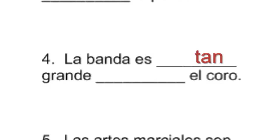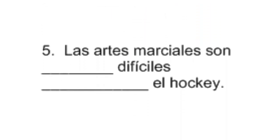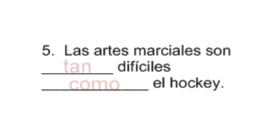La banda es _____ grande _____ el coro. We're just saying 'as big as' with an adjective in the middle, so we use tan: tan grande como el coro. And number five: Las artes marciales son _____ difíciles _____ el hockey. Again it's an adjective, so simply tan — tan difíciles como el hockey. That's the quick review of tan and tanto.